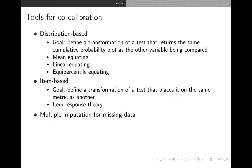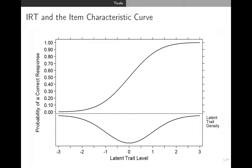If you've got item-level information, you can use item response theory. In classical test theory, we're interested in scoring a person's performance on a test. But item response theory is interested not only in the score of a person, but also the score of a test: how difficult is a particular item, and can we rank items in relative difficulty? The importance of IRT is encapsulated in the item characteristic curve — an S-shaped logistic function. On the Y-axis is the probability of a correct response; on the X-axis is the latent trait level — the person's ability level.